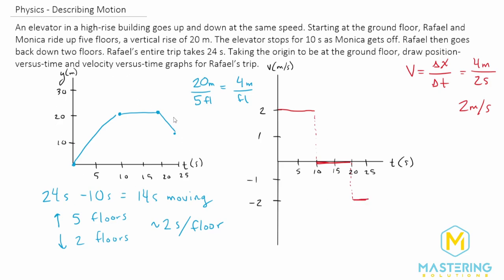So now we have our position versus time graph here for the elevator. And this is the velocity versus time graph for the elevator here.